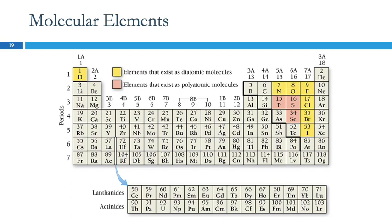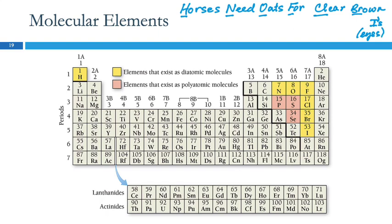So that's one way to remember it. There's also a mnemonic, which is basically a silly sentence. There's others, but this is the one I use: Horses need oats for clear brown eyes. The first letter or two of each of those words represents one of the seven diatomic elements. So this is something that you are expected to know.